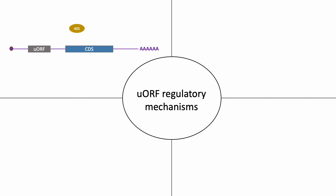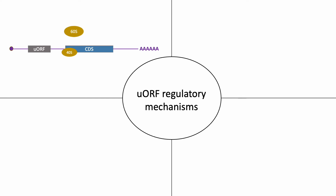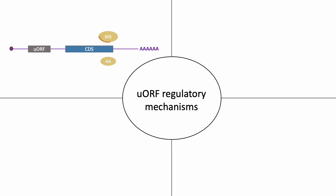If the scanning 40S fails to recognize the start codon of a UORF, it will continue to scan for the next start codon in an unobstructed manner. This is known as leaky scanning, and this will lead to normal translation of the gene's coding region.